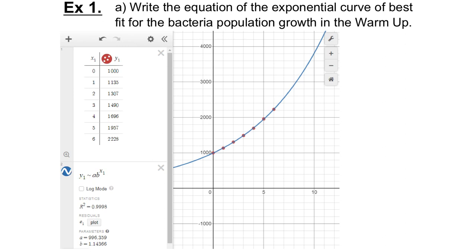We don't just type y or x — we type y1 and x1. These are references to your table of values, so that it's making an equation to fit this table of values as opposed to a different table you could also add below. Once you type this into Desmos, it spits out all this information. The r-squared value — I'm not going to get too much into that — but that's a statistical measure of how well this equation fits the data in the table. The closer it is to 1, the better the fit. When it says 0.9998, that's really close to 1, so this model — this blue curve — fits our data really well. It's a very good model to fit our bacterial population growth.